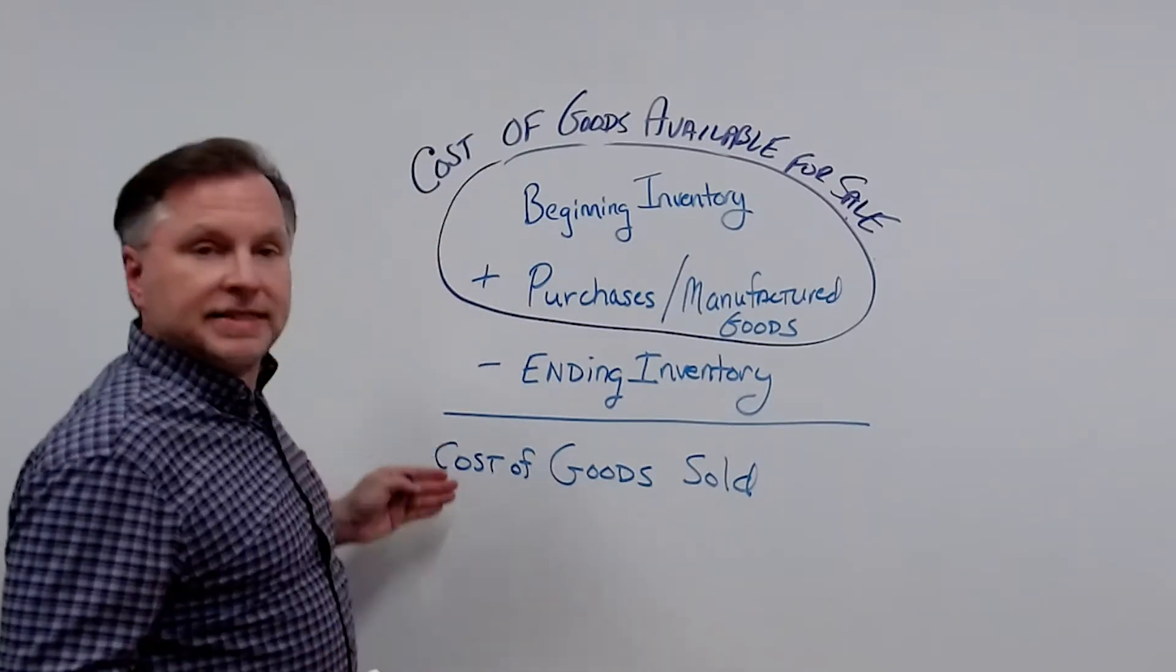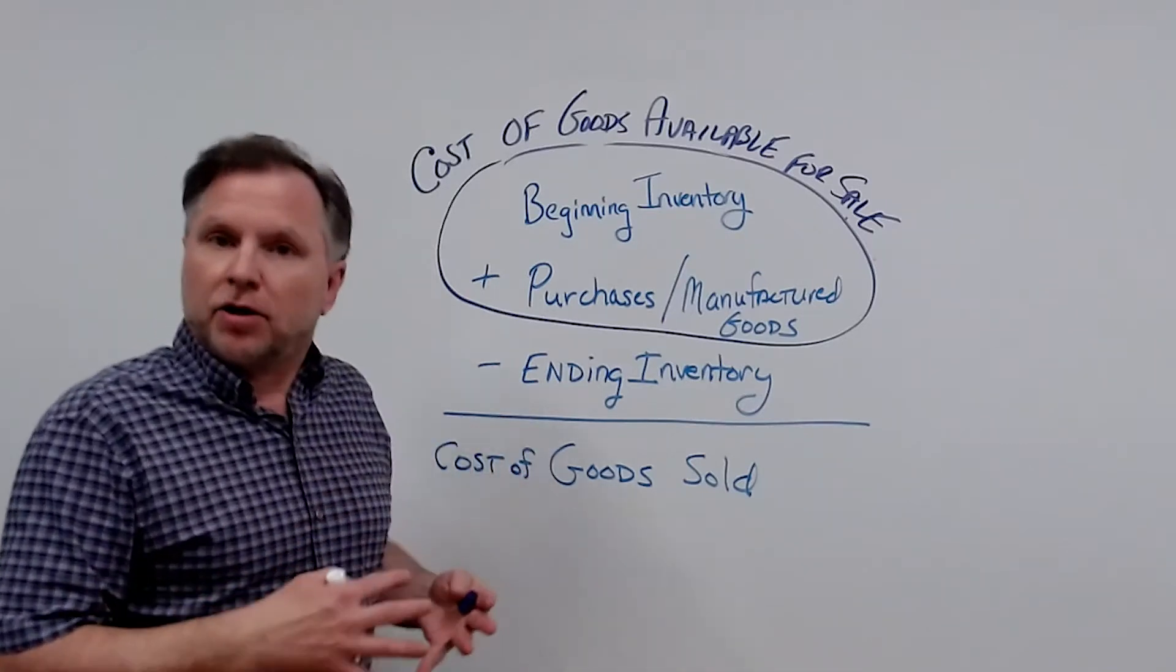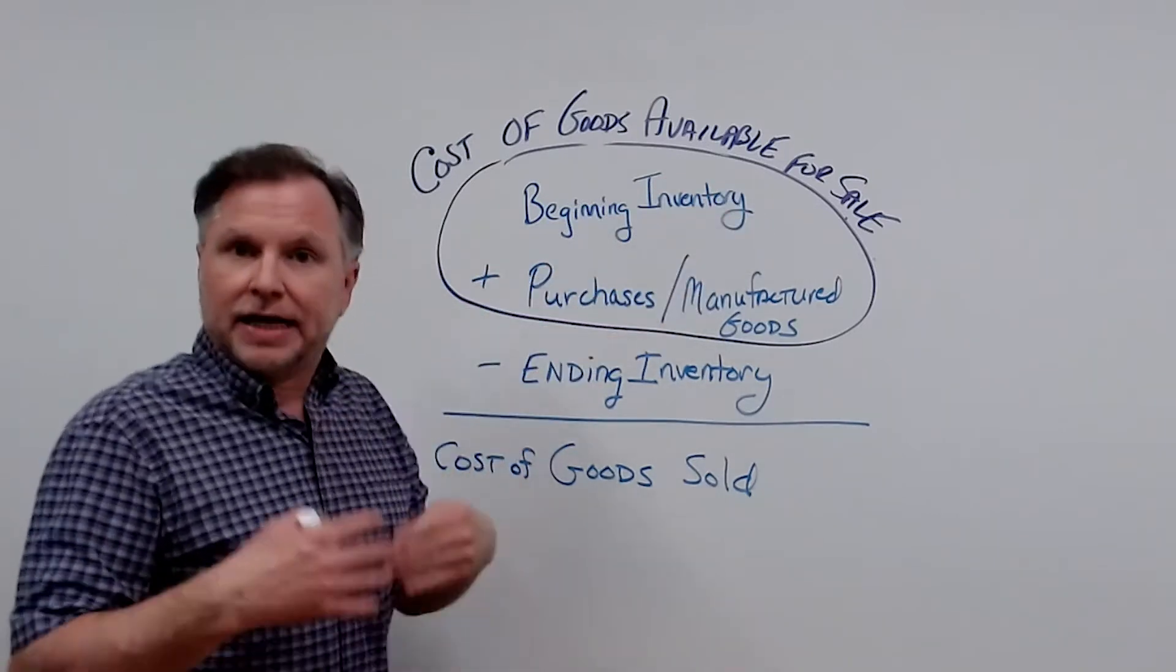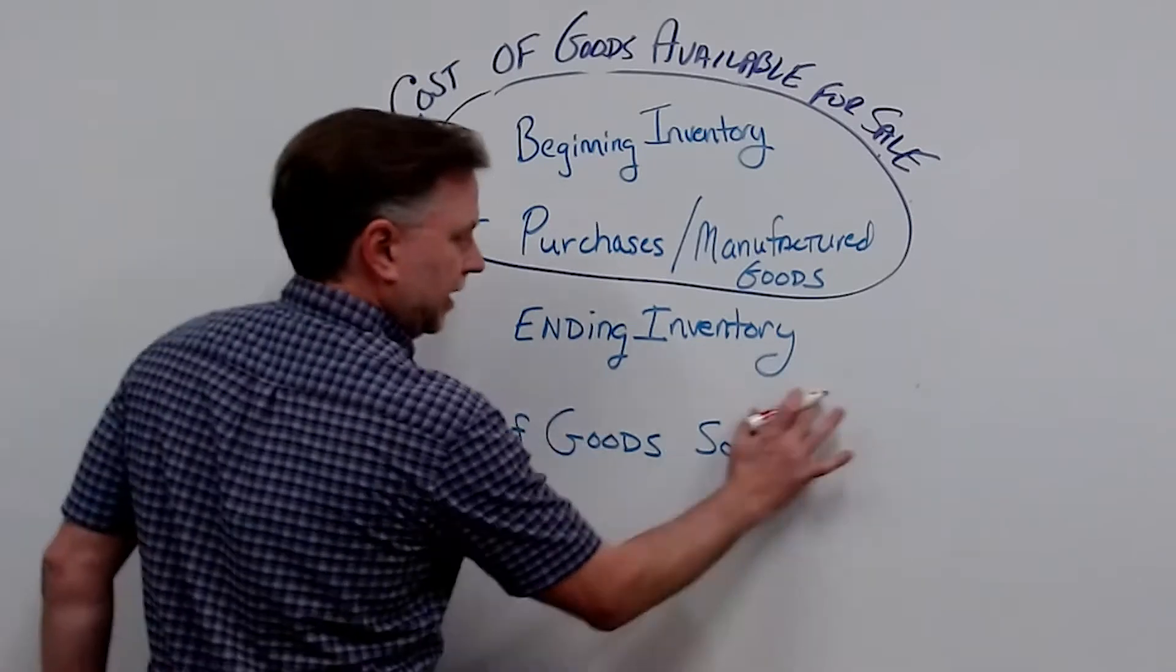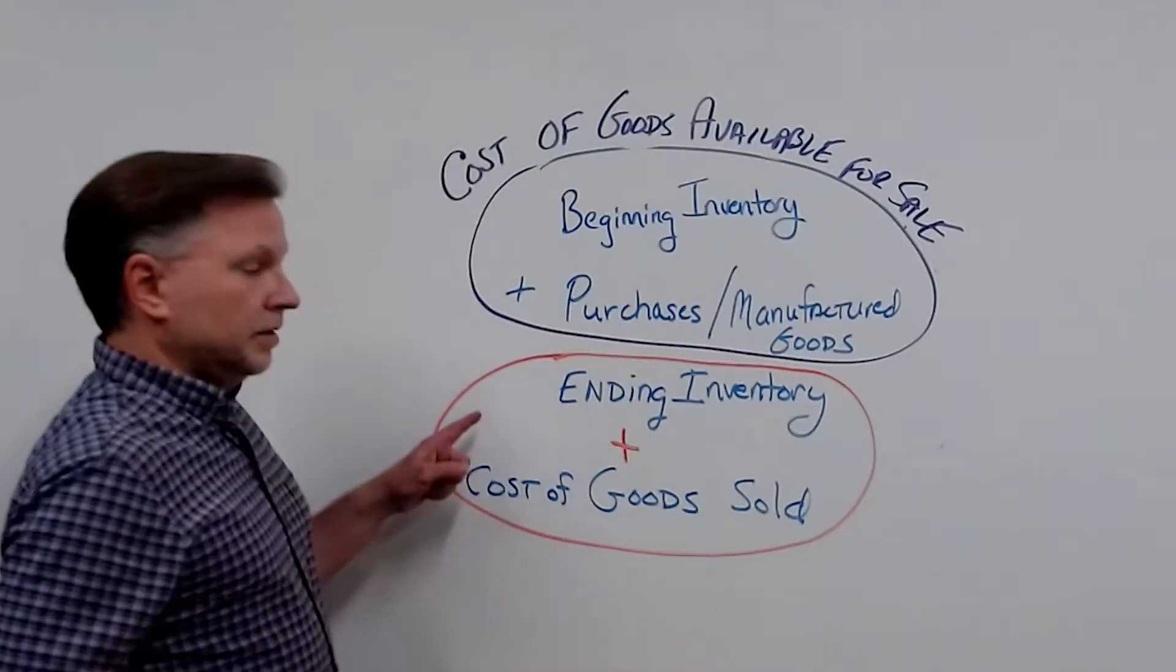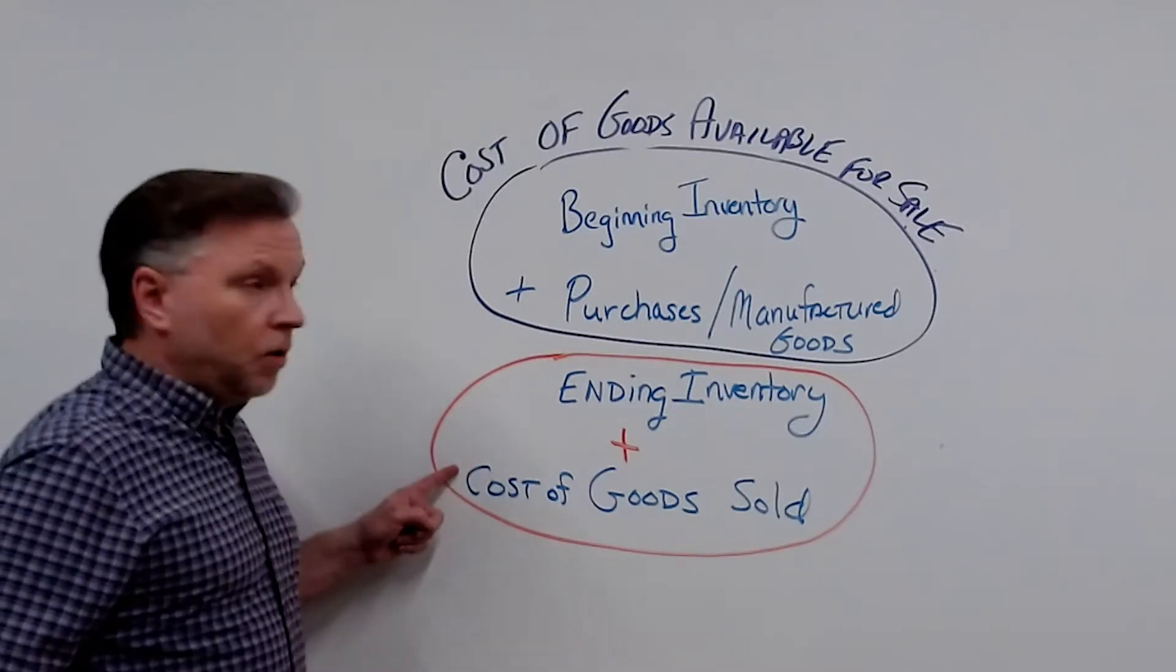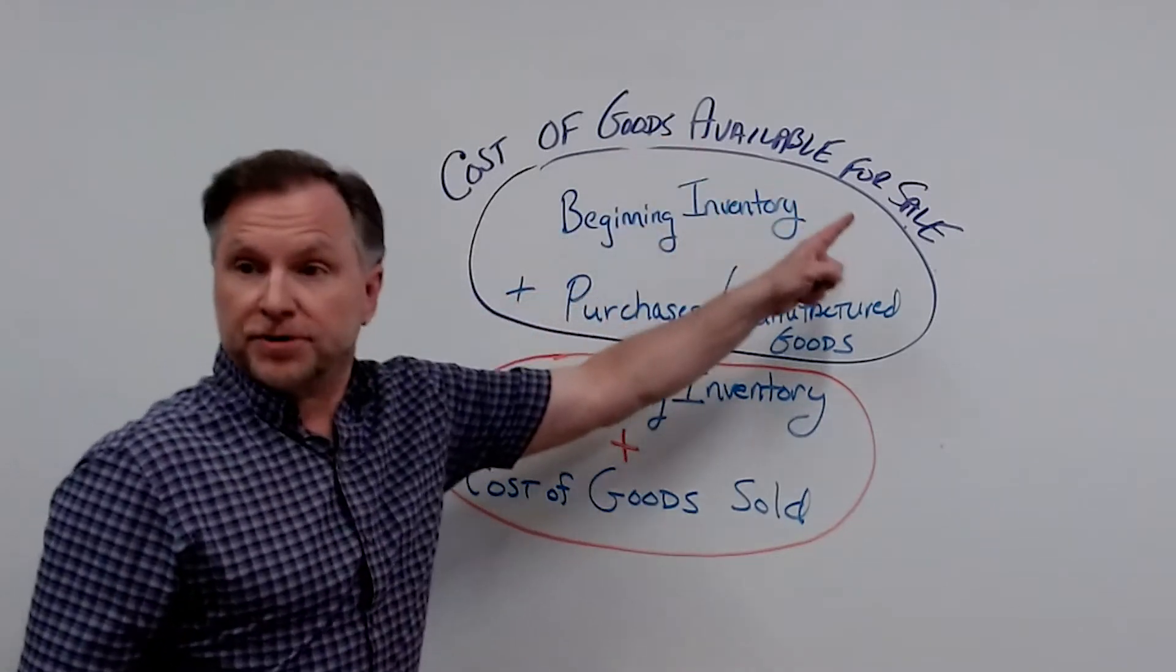So that means we can figure out a way to get the cost of goods available for sale a different way also. So our ending inventory, plus our cost of goods sold, also equals our cost of goods available for sale.